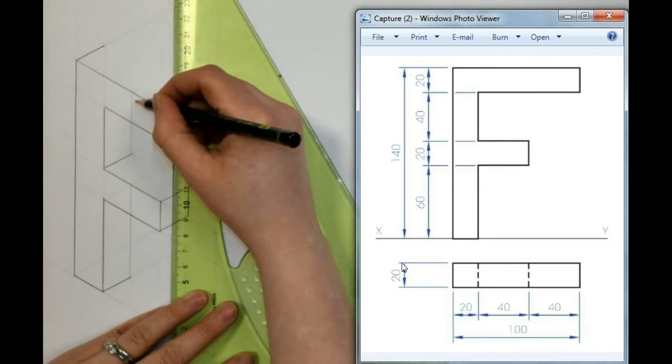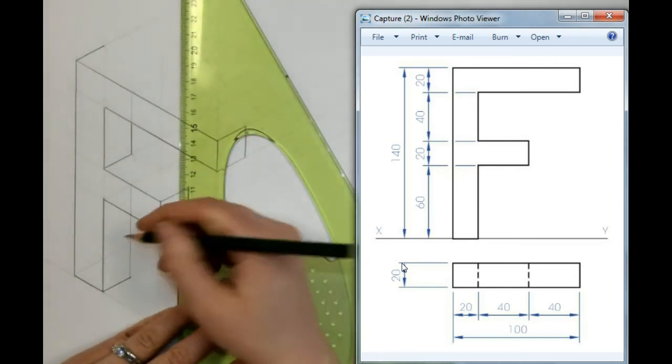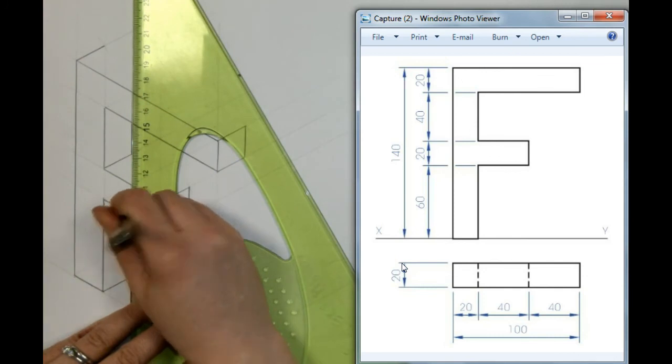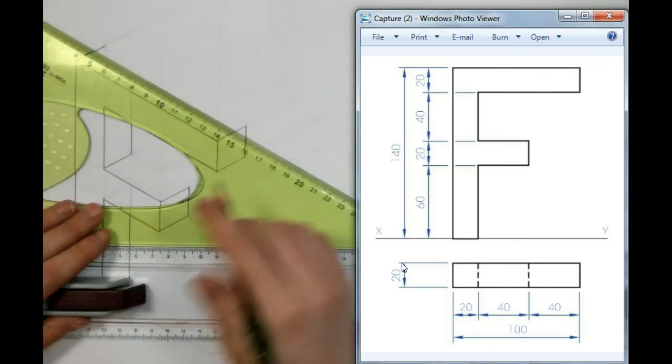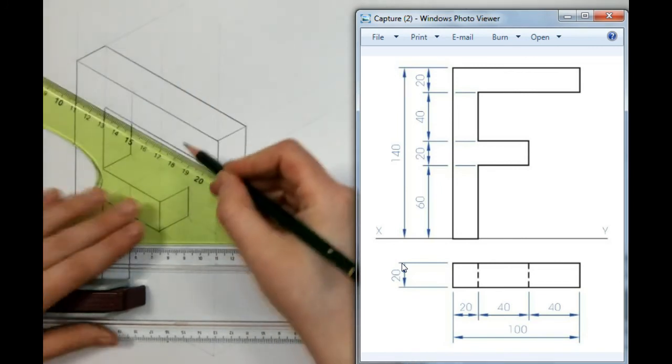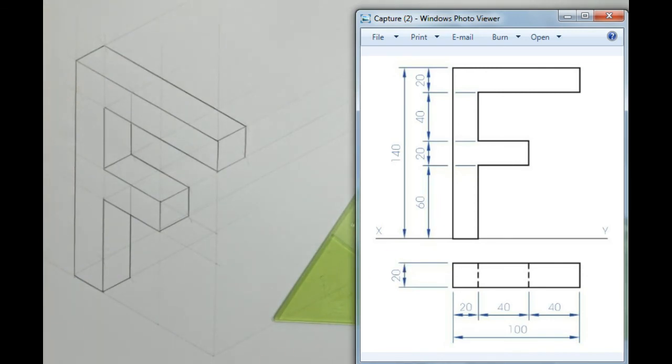However, as you can see, the F body is obstructing it. I'm only going to see this part here in darkness, and the same on the bottom. This part is obstructed, so I don't show it. And that's my F drawn in isometric projection.